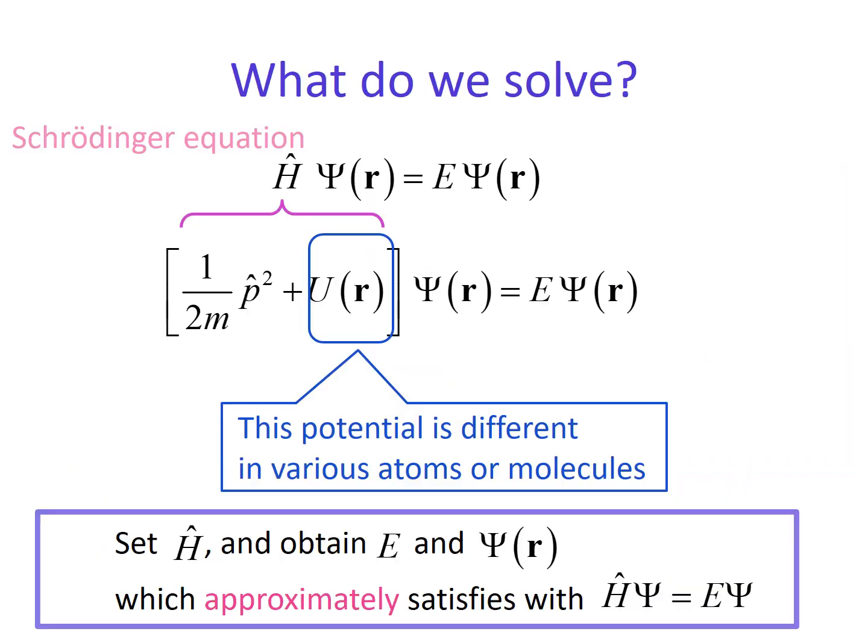Then, what do we solve for the Schrödinger equation? Actually, this potential function is different in various atoms or molecules. For example, if we want to solve the H2O system, we can fix this potential for H2O and define H hat. Then we should obtain energy E and wave function psi, which approximately satisfies H hat psi equals E psi.